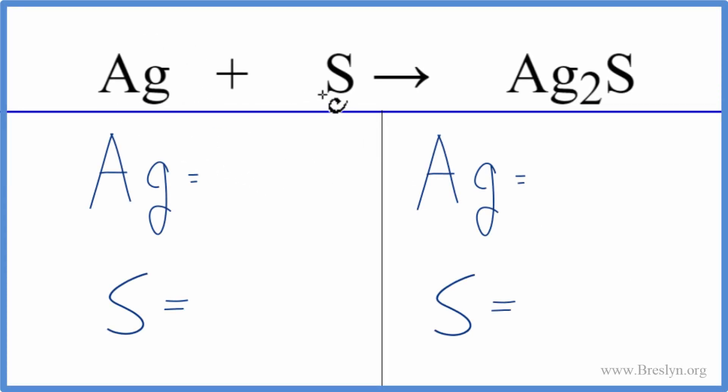In this equation, we have silver plus sulfur. They come together in a combination or synthesis reaction, and we get silver-2-sulfide.